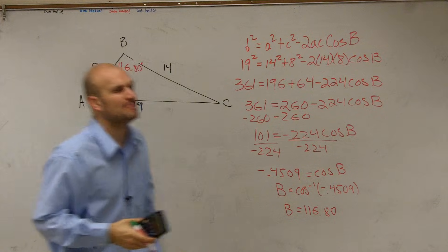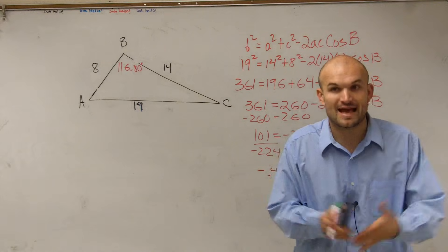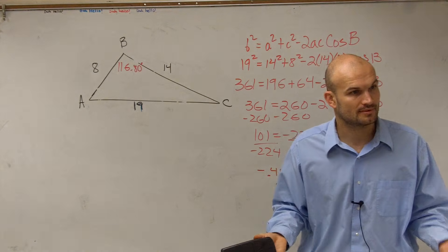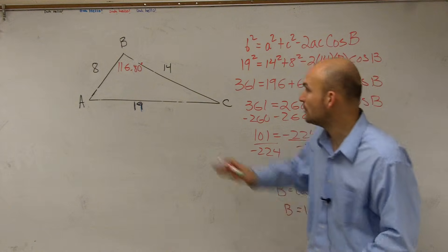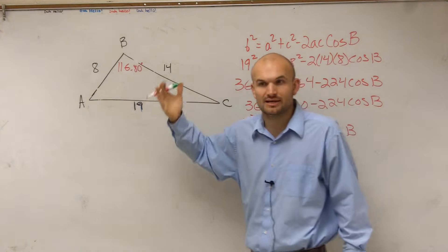Now why is it so important to know that B is an obtuse angle? Well it's important because if you know if you have one obtuse angle, it's impossible to have any other obtuse angles, right? That's very, very important to know. Once you have this obtuse angle, your other two angles have to be acute.